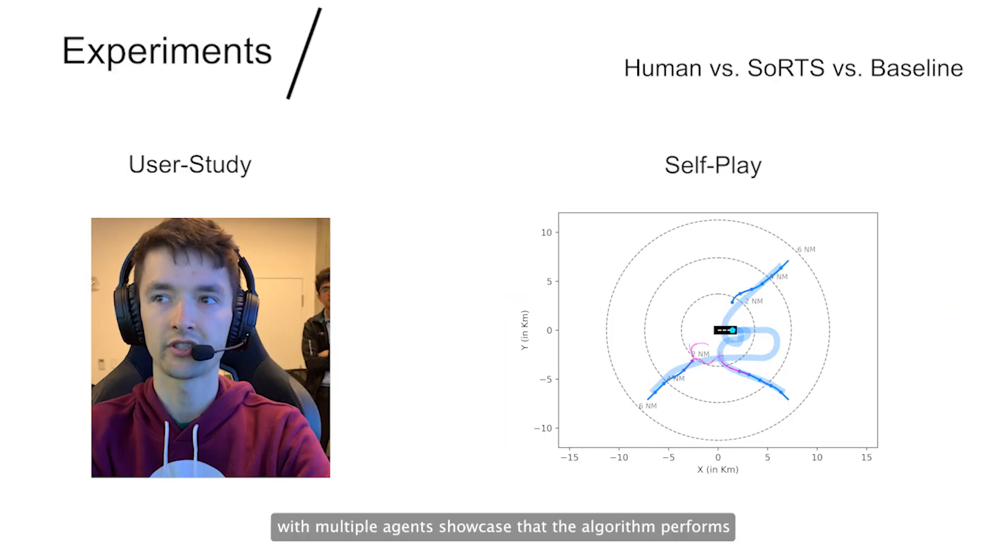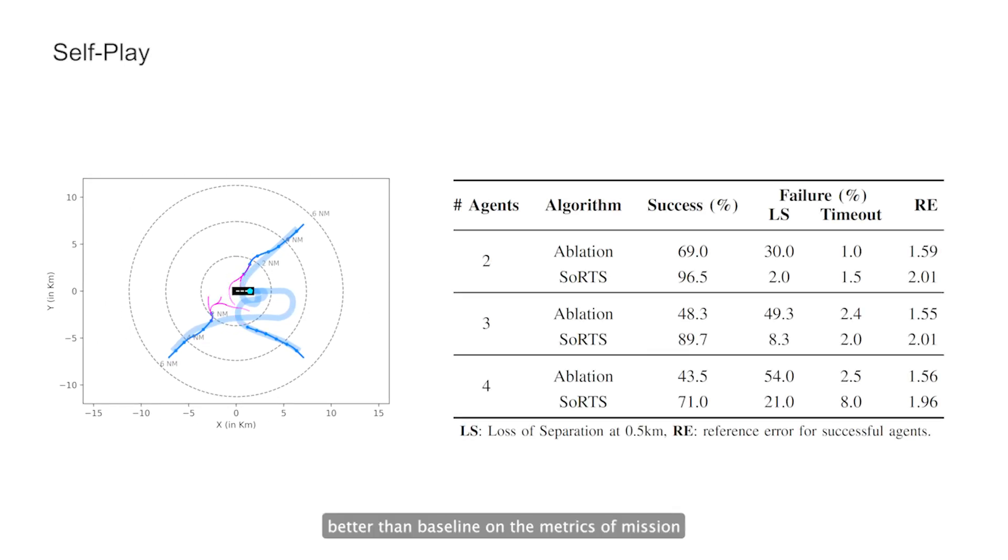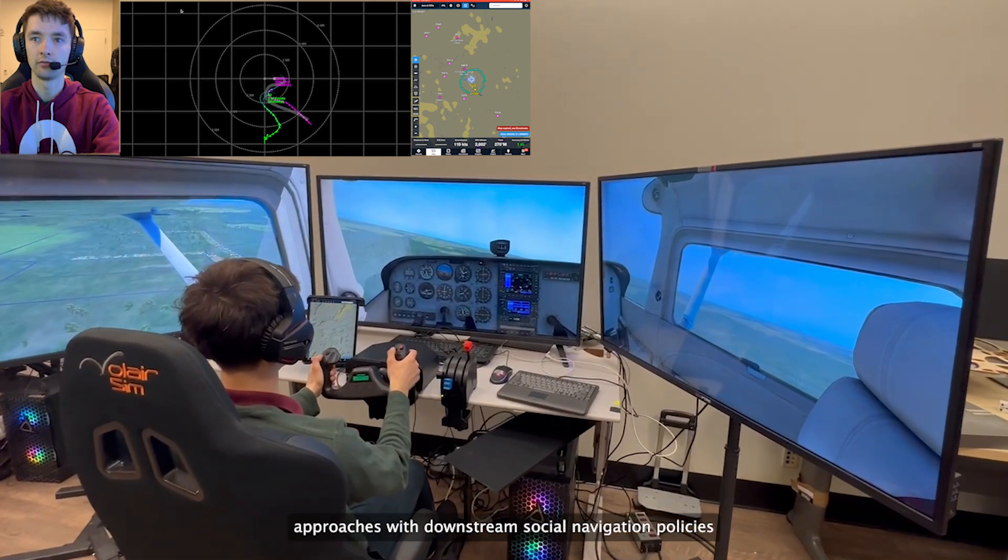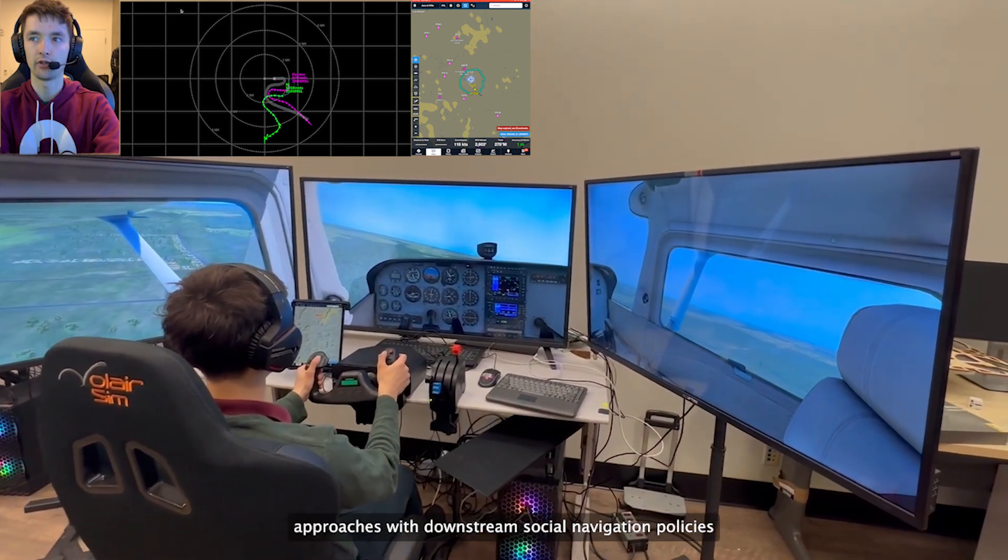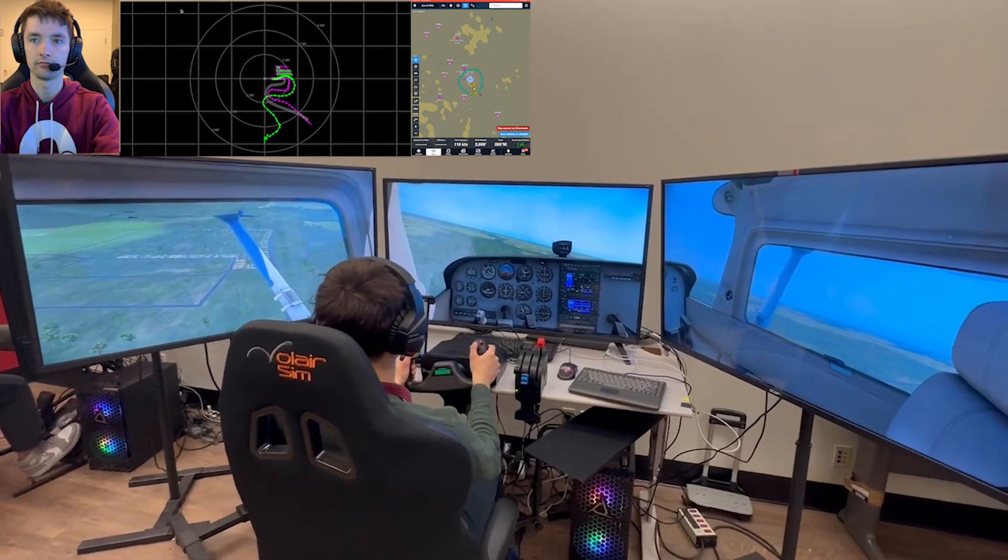Self-play experiments with multiple agents showcase that the algorithm performs better than baseline on the metrics of mission success, loss of separation, and reference trajectory error. SORTS is the first step in fusing data-driven social prediction approaches with downstream social navigation policies for robots, enabling safe human-robot interaction.